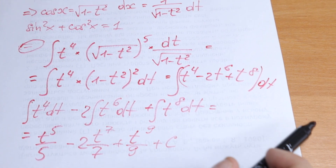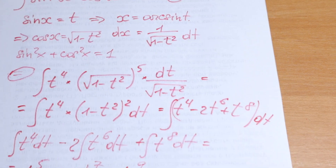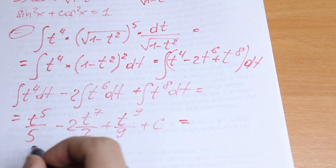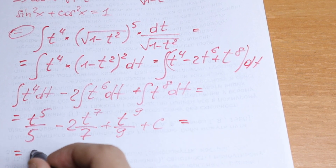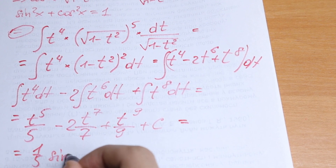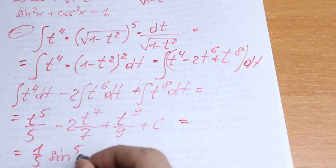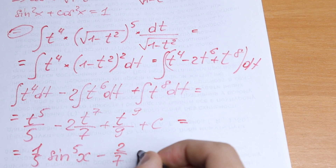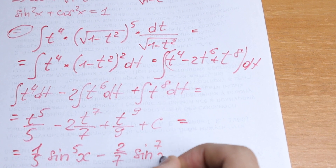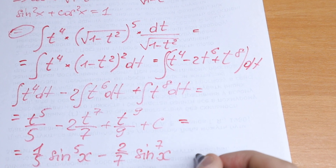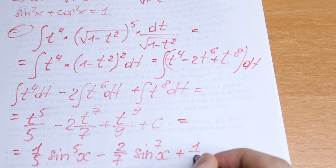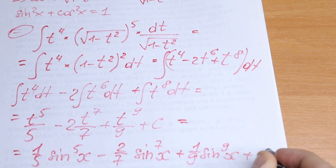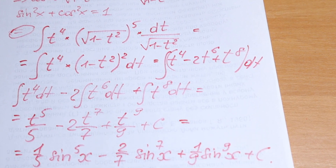Now let's return to our substitution. We had sine x equal to t, so we replace t with sine x. The final answer is: one-fifth sine to the fifth power x, minus 2 over 7 sine to the seventh power x, plus 1 over 9 sine to the ninth power x, plus C.